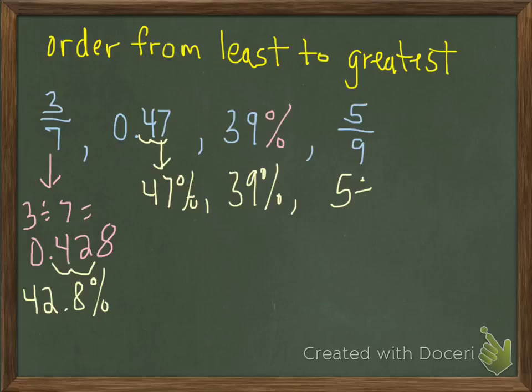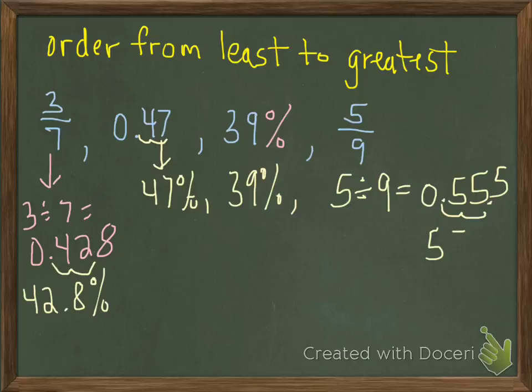And 5 ninths, we want to make sure we do the same thing, dividing 5 by 9. And if you did that in your calculators, you would get 0.55, it would repeat forever. But we really only need 3 digits, because then we're going to move it 2 places to the right to get our percent. We're at 55.5%.